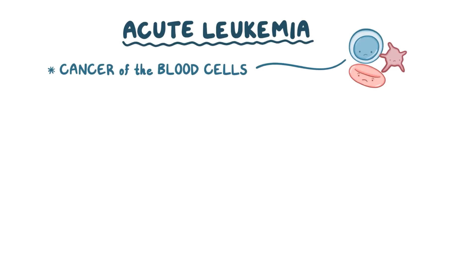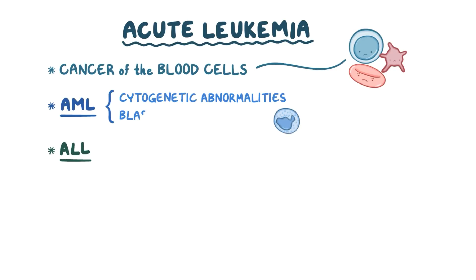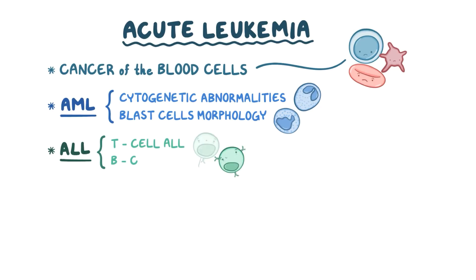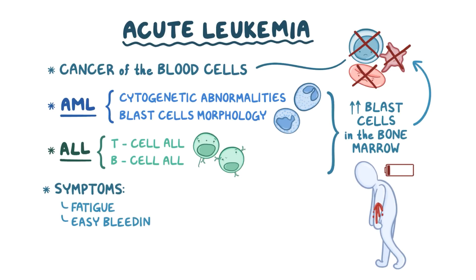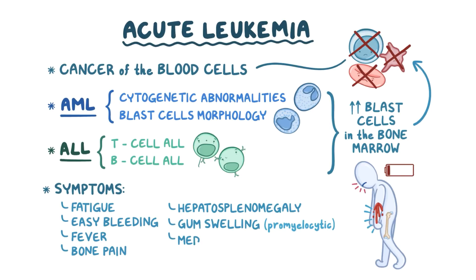As a quick recap: acute leukemia is a cancer of the blood cells, classified into AML and ALL. AML can be further subdivided into different types based on cytogenetic abnormalities or blast cell morphology. ALL is classified into T cell ALL and B cell ALL. Both AML and ALL lead to accumulation of blast cells in the bone marrow, which interferes with the development and function of healthy white blood cells, platelets, and red blood cells. Major symptoms include fatigue, easy bleeding, fever, bone pain, hepatosplenomegaly, gum swelling in the promyelocytic type, and mediastinal mass in T cell ALL.